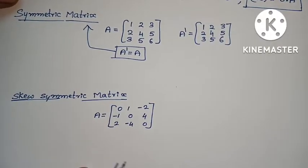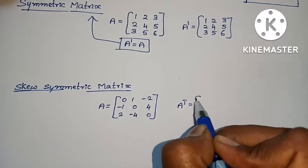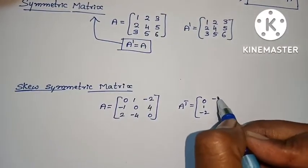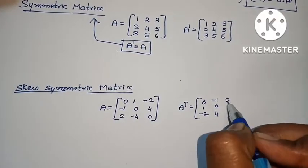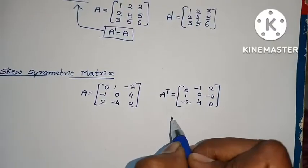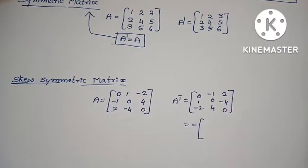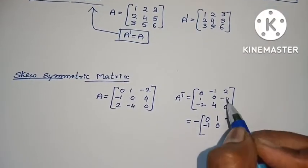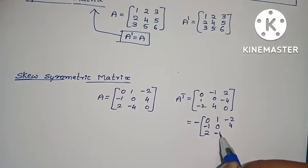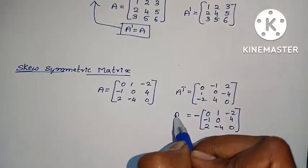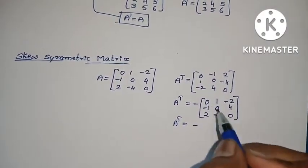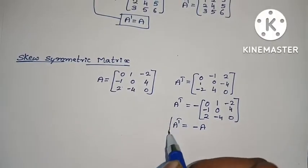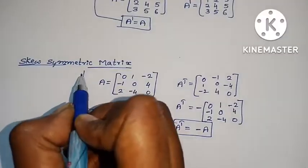Skew symmetric matrix. Example — first row: 0, 1, minus 2; second row: minus 1, 0, 4; third row: 2, minus 4, 0. Taking minus common, A transpose equals minus of the original matrix. Since A transpose equals minus A, this is a skew symmetric matrix.